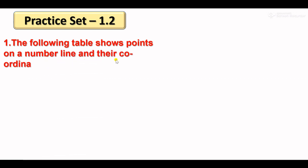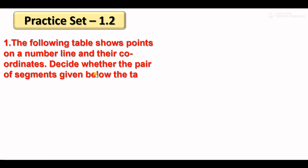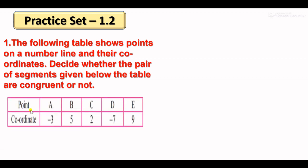The following table shows points on a number line and their coordinates. Decide whether the pair of segments given below the table are congruent or not. You have a table with points and coordinates. The first pair is segment DE and segment AB.